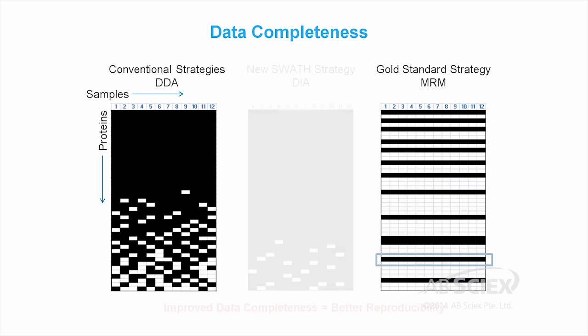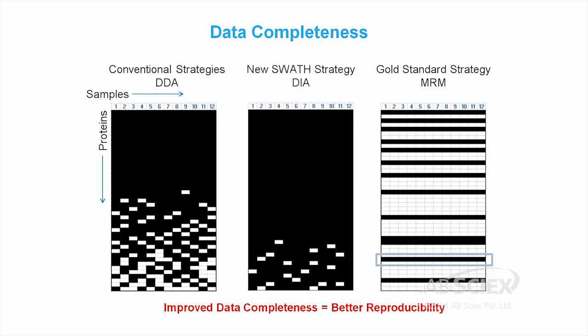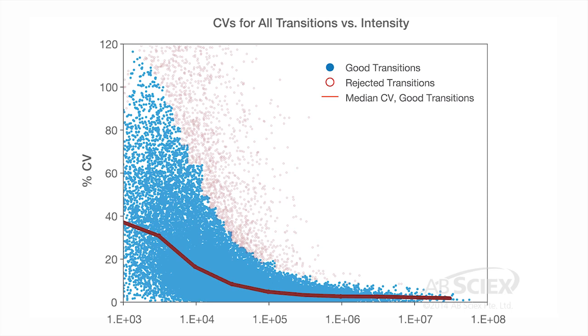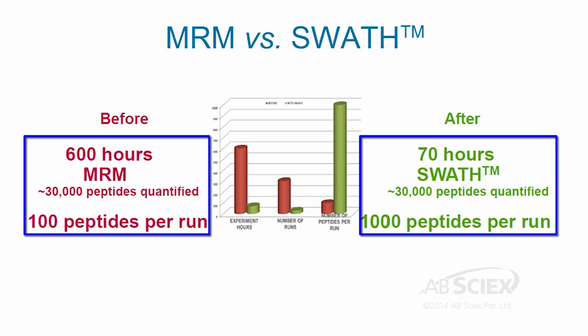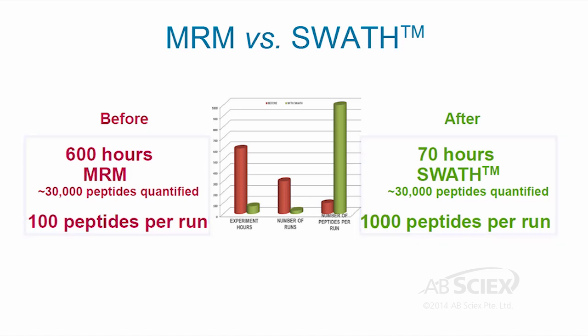Unlike data-dependent strategies, the untargeted acquisition coupled with the targeted quantitation of the SWATH workflow provides a greater degree of data completeness with the added selectivity of MRM-like methods. Unlike targeted approaches, MS-MS spectra for all detectable peptides are acquired in a single run. This obviates the need for multiple methods, thereby significantly reducing acquisition time.